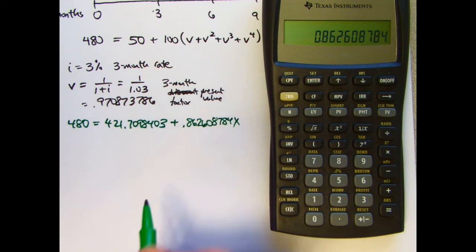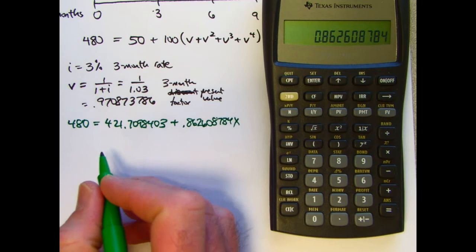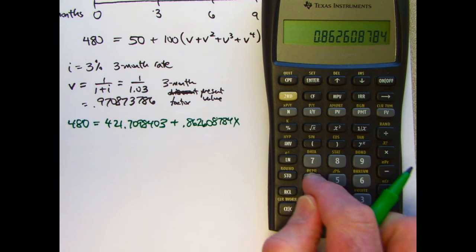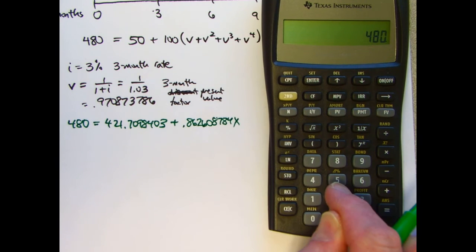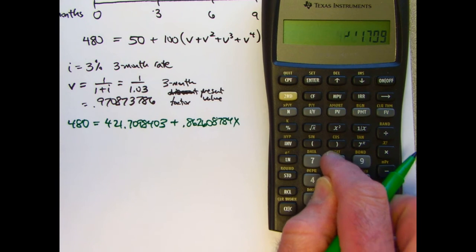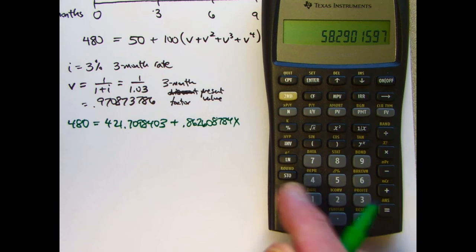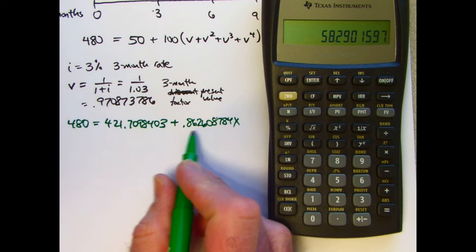Divide both sides by 0.8626. Divide by 0.862608784.